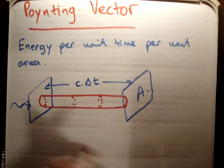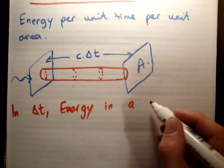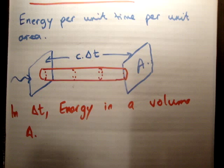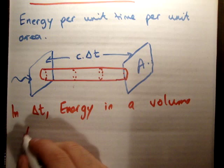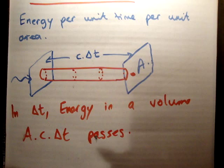So we can say in a time delta t, the energy in a volume A times c times delta t passes this point here.